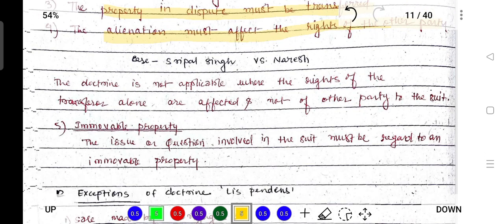Fourth, the alienation must affect the rights of the other party. In the case of Rajasing versus Naurish, the doctrine is not applicable where only the rights of the transferee are affected and not the other party.